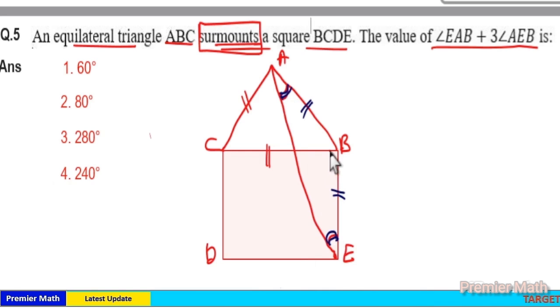This angle in the square is 90 degrees, and this angle from the equilateral triangle is 60 degrees. So angle ABE equals 90 plus 60, which is 150 degrees. The total angle of a triangle is 180 degrees. 180 minus 150 is 30, so each of these angles is 30 divided by 2, which equals 15 degrees.